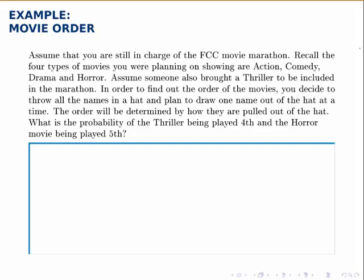In order to find out the order of the movies, you decide to throw all the names in a hat and plan to draw one name out of the hat at a time. The order will be determined by how they're pulled out of the hat. What is the probability that the thriller is played fourth and the horror movie is played fifth? Any time we calculate a probability, it's simply the number of ways that our event could happen divided by the number of total ways that this scenario could play out.